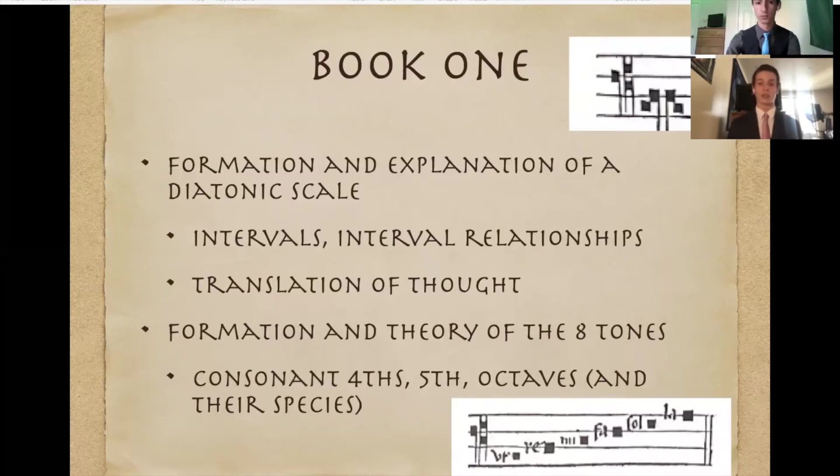But what's really interesting about this book is we see this translation of thought. There are three main people involved in this. We have the Greeks, Guido d'Arezzo, and Gaffurius. So the Greeks understood scales in terms of a letter-based system, but it wasn't until we got to Guido that we had, as you see in the bottom right hand corner, we started to use solfege. Guido was one that said we have Ut, Re, Mi, Fa, Sol, and La.